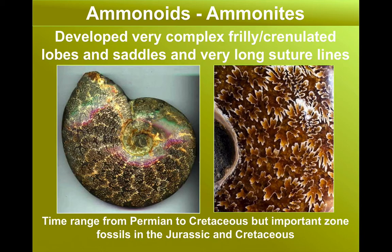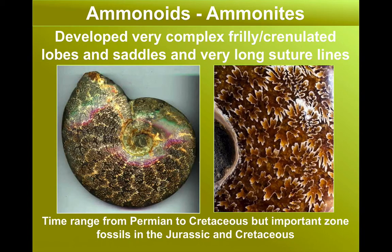The final group to evolve were the ammonites, and ammonites have a distinctive set of very complex suture lines. These evolved in the Permian, became extinct at the end of the Cretaceous, but they really became an incredibly diverse group in the Jurassic and Cretaceous, which allows those periods to be very accurately dated by their zoned fossil content.